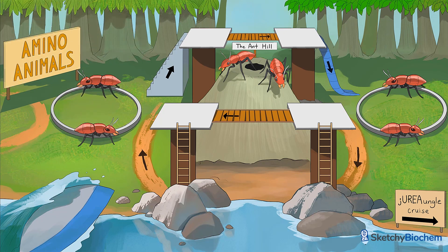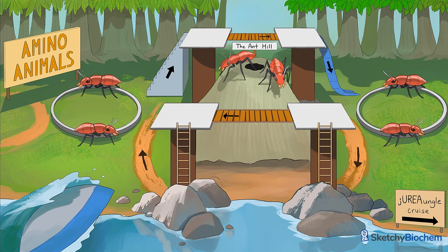Welcome to the anthill, where you're literally surrounded by a giant anthill. The Cahill cycle shuttles amino and carbon groups from skeletal muscle to the liver. You may also hear it called the glucose-alanine cycle if you're playing by Scrabble rules and can't use proper nouns.